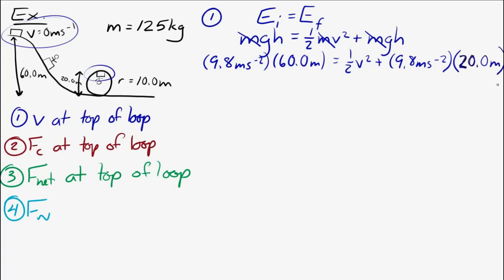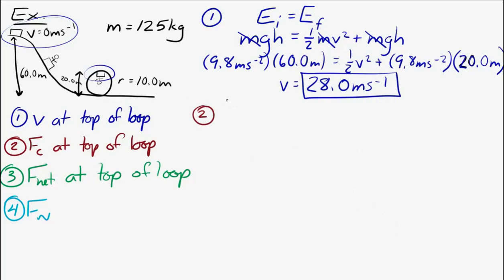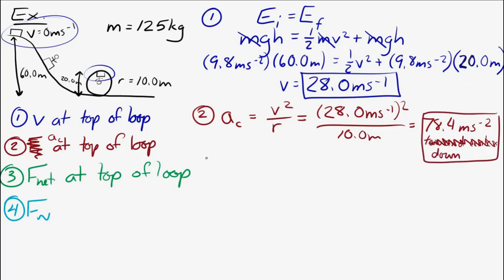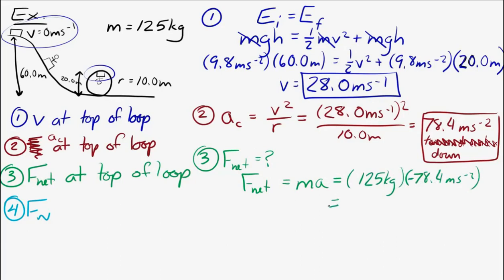That's a common mistake — using the radius instead of the diameter as the final height. With the final height of 20 meters and initial height of 60 meters, we solve and find the speed at the top of the loop is 28 meters per second. Now for centripetal acceleration: a = v squared over r. With our known values, centripetal acceleration is 78.4 meters per second squared, directed downward — toward the center at the top of the loop.